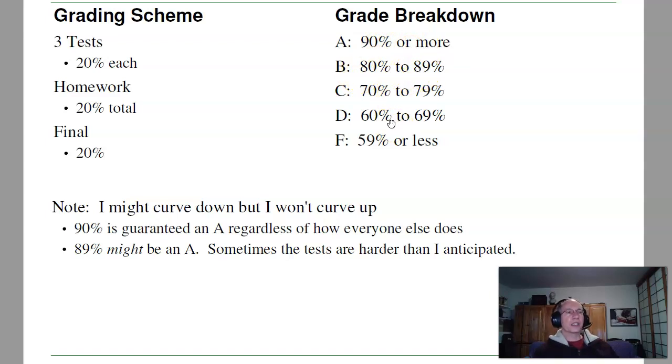For curving, I will curve down, or I might curve down, but I won't curve up. Meaning that if you have a 90%, guaranteed you have an A, no matter what the curve is. If you're sitting at 89%, maybe, maybe not you have an A. It depends upon the curve. Sometimes the tests are harder than I anticipated, so sometimes it'll curve down, sometimes not. But again, if you have 90%, you have an A. And part of the reason for doing that is if you work together and learn the material, I'm happy to give out all A's. However, midterms are independent effort, so please don't work together on the midterms. That will hurt your grade. The homeworks you can work together, studying for the midterms you can work together, but tests and final are independent effort.